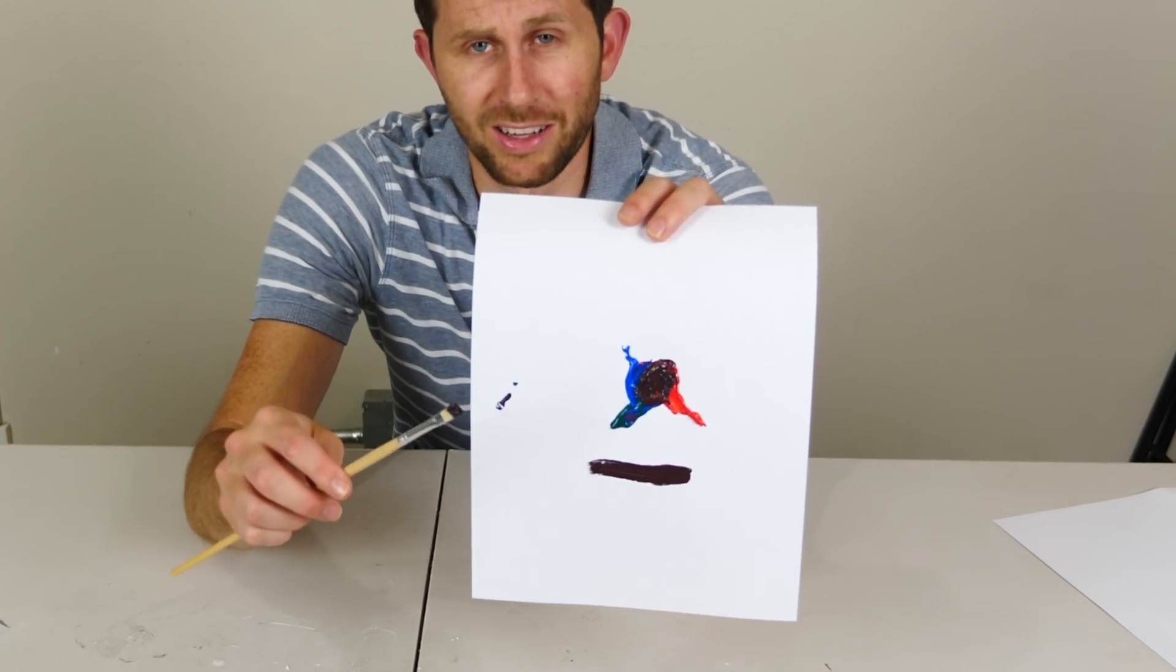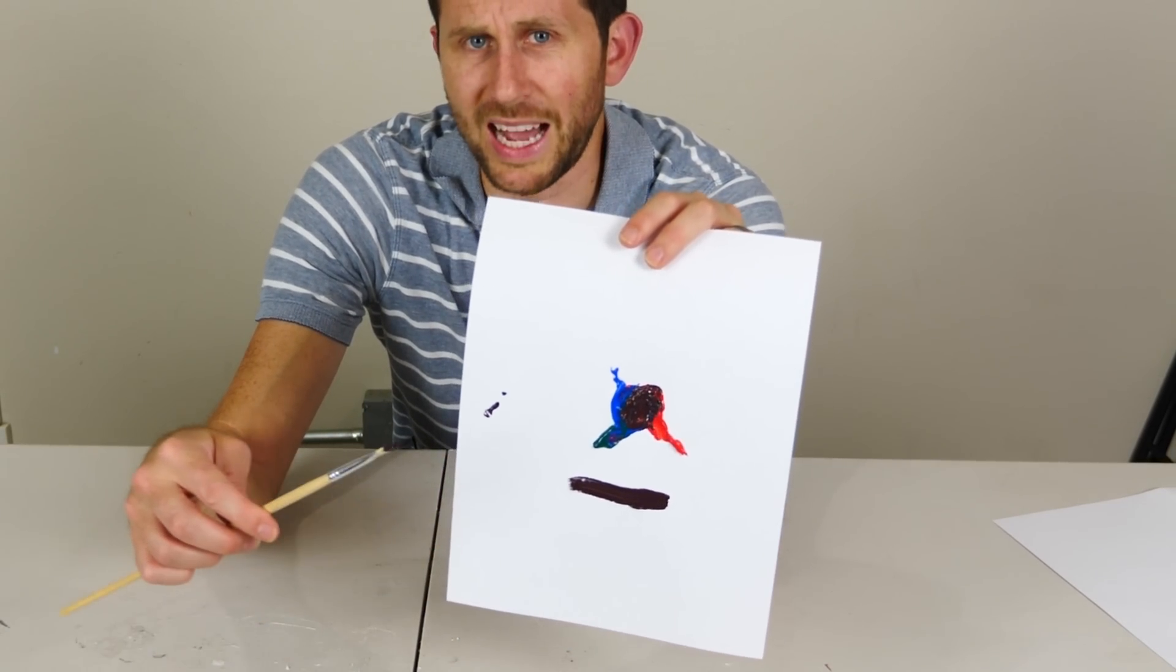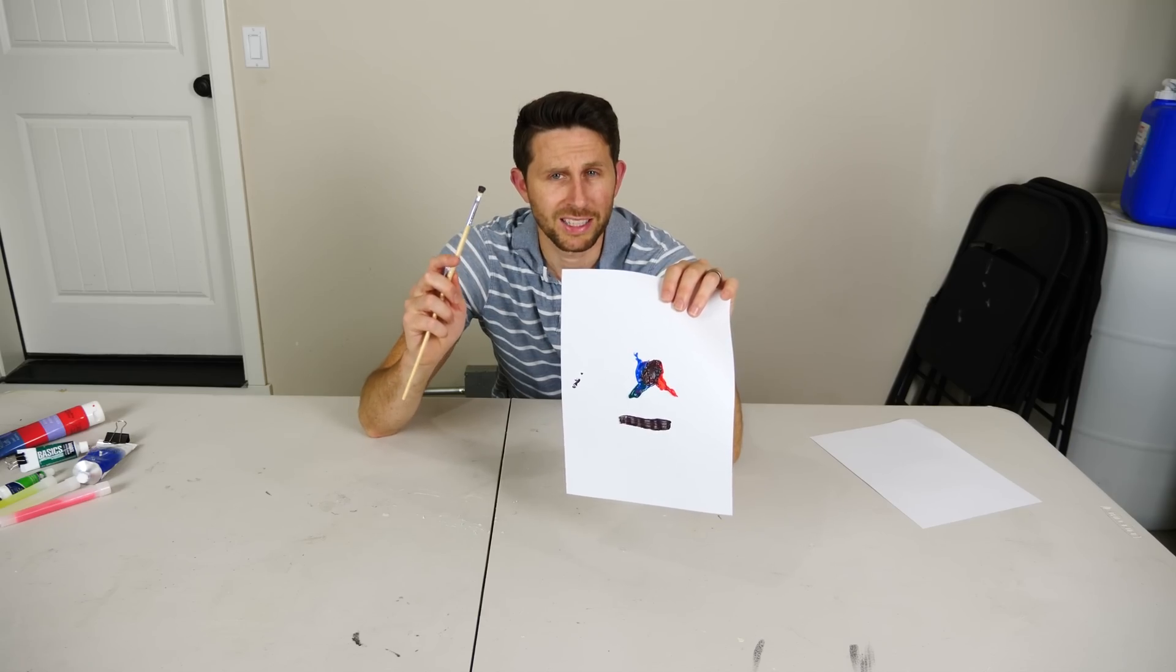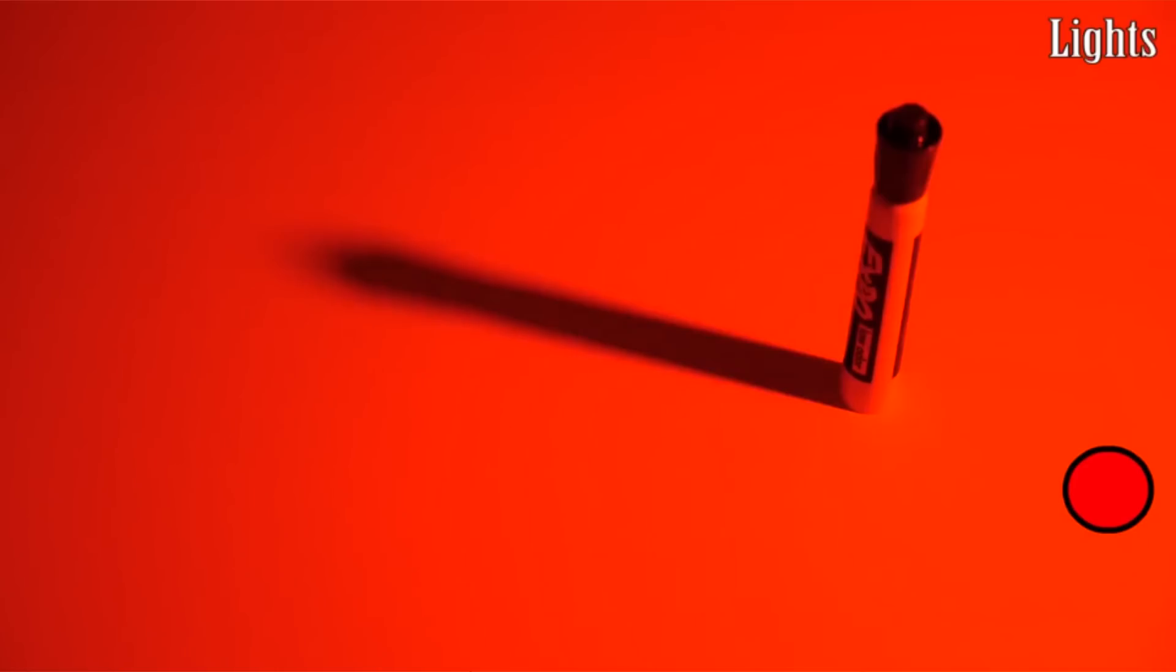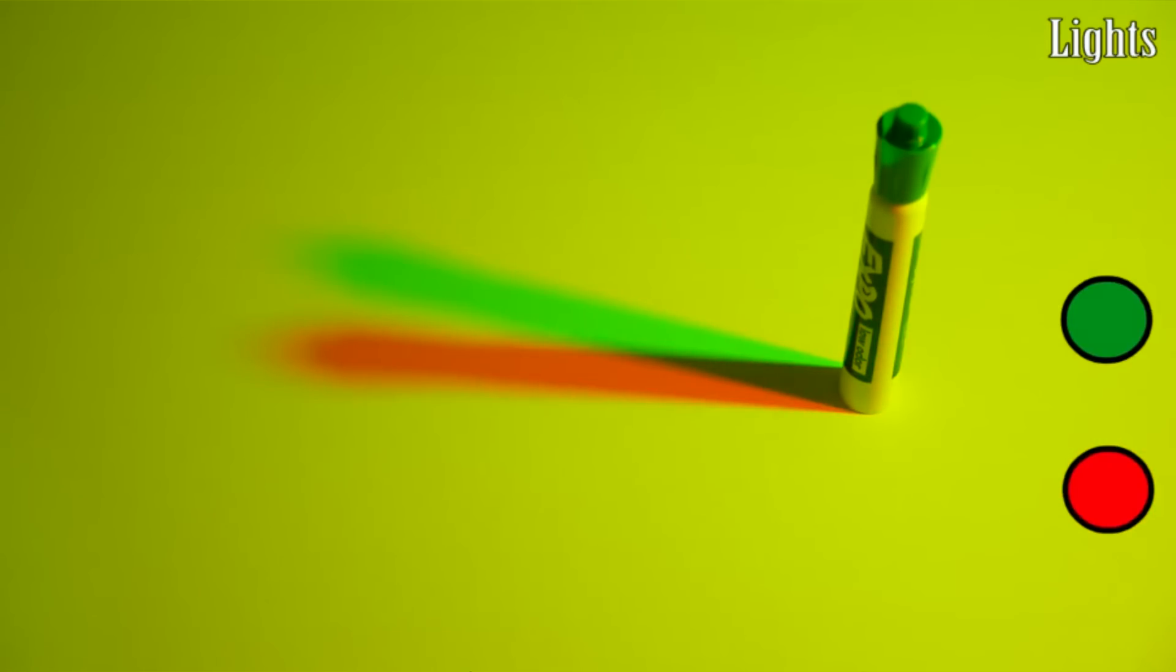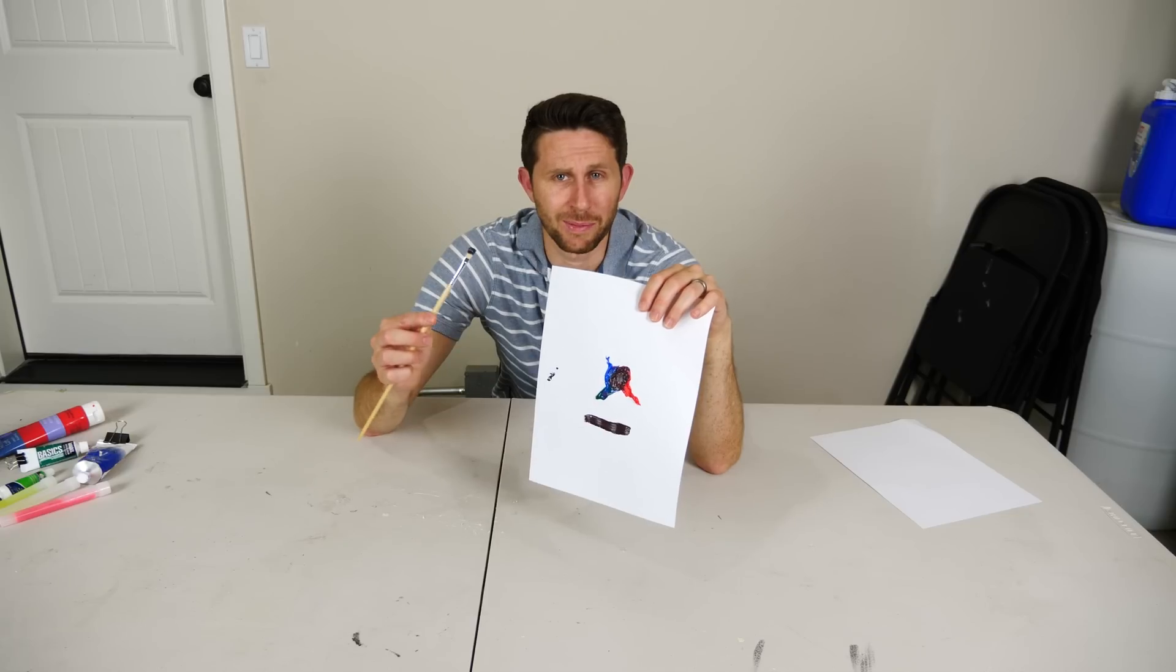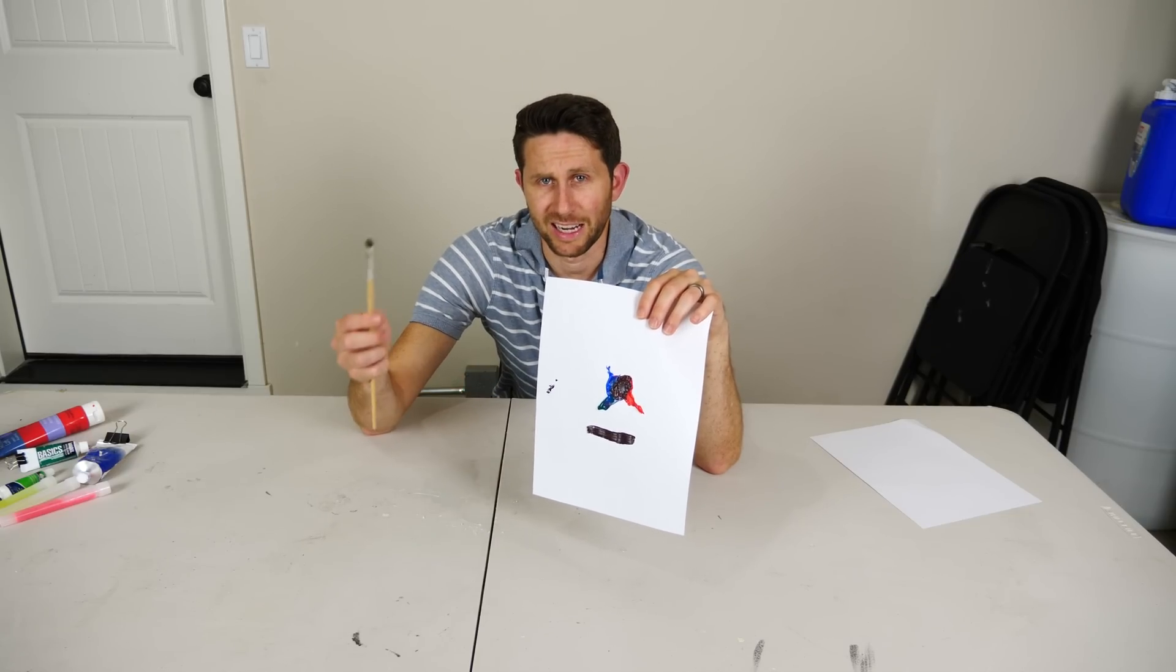So you can see that when I mix all of these colors together I just get this blackish color. But you also know that if you mix red, green, and blue light together, like in this experiment, you get white. So why is it that when you mix paint together you get black, but when you mix light together you get white?